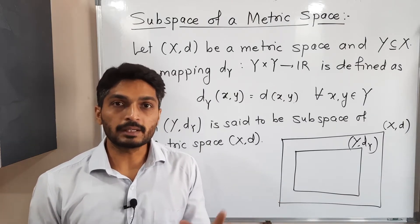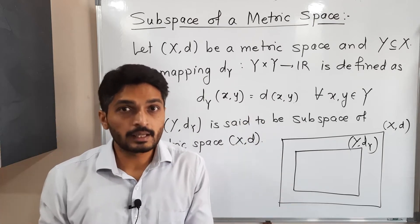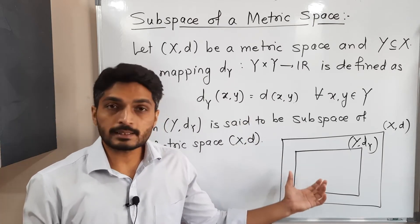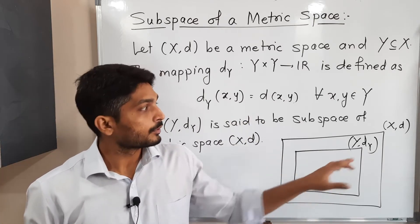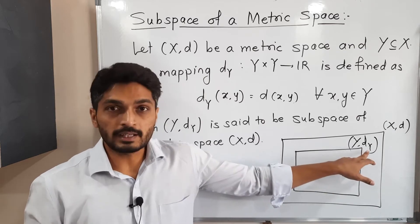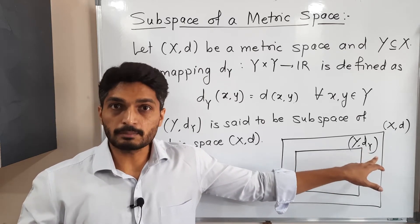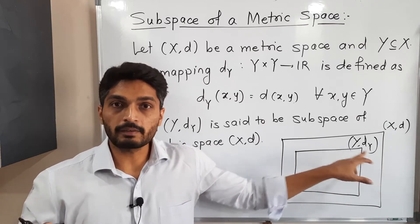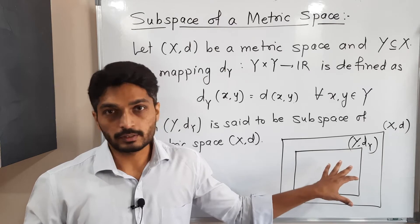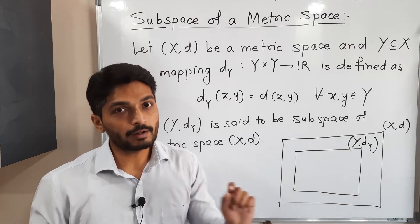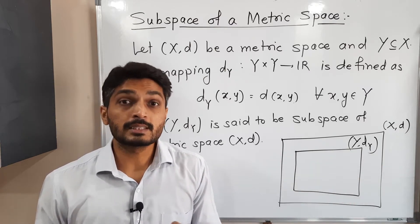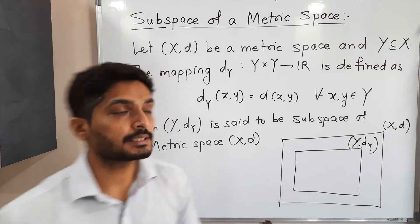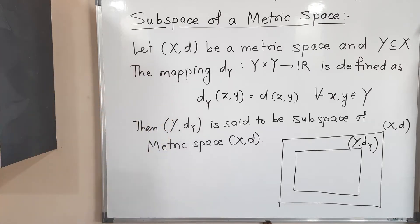To repeat: when we have a metric space X and Y is a subset of X, then dY is defined the same as d - we simply operate dY on elements of Y. So Y together with dY is said to be a subspace of the given metric space (X,d). Make a screenshot of it and then we will go further.